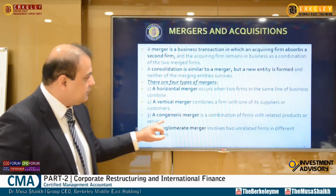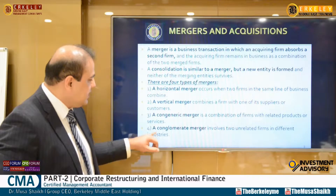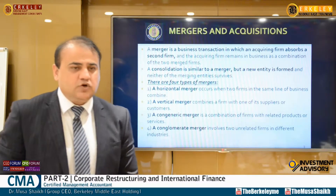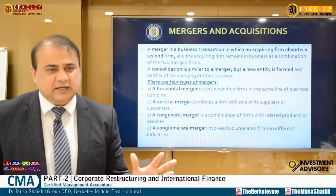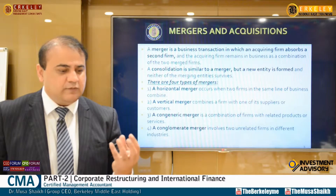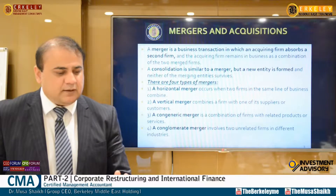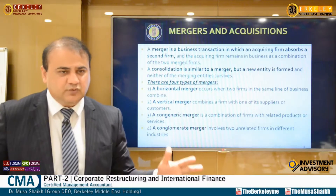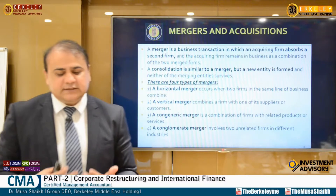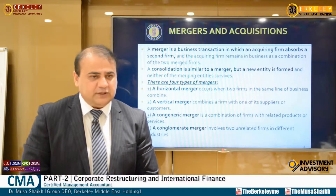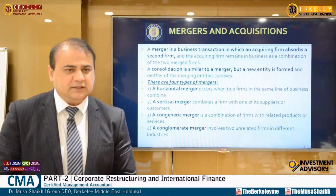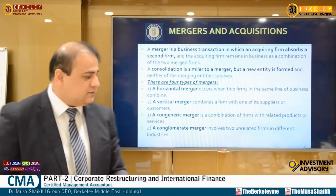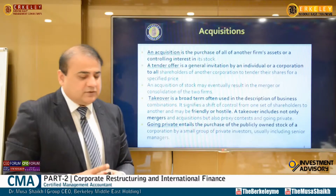A congeneric merger is a combination of firms with related products or services. A conglomerate involves unrelated businesses — for example, you are a mobile seller and you also have a dairy business. These are two completely different businesses, and this leads to the concept of portfolio management: don't put your eggs in one basket. We make different businesses with different risk and returns, which ultimately forms a conglomerate merger.